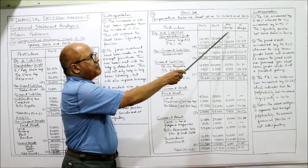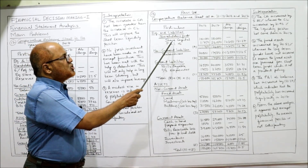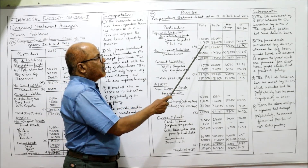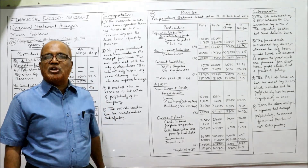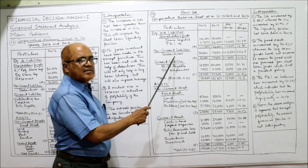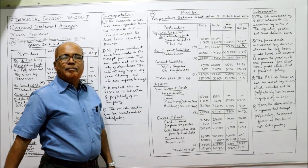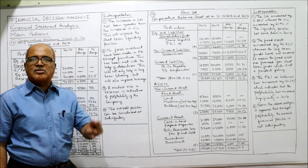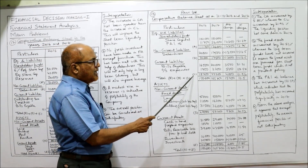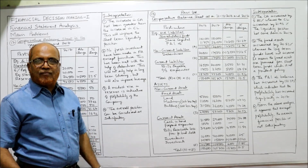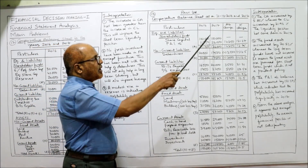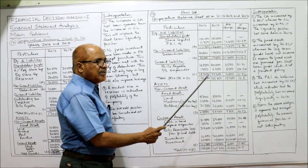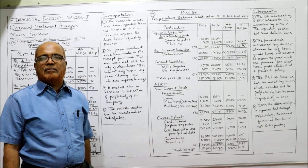Shareholders' fund: share capital 1 lakh — no change in both years. Profit and loss account: 11,750 last year, 26,000 current year. A is the total of shareholders' fund. Non-current liabilities are debentures — denoted as B. Current liabilities are bills payable and outstanding expenses, denoted as C. The total of A plus B plus C: 1,50,000 is the total liabilities for last year, and 1,65,750 is the total for the current year.